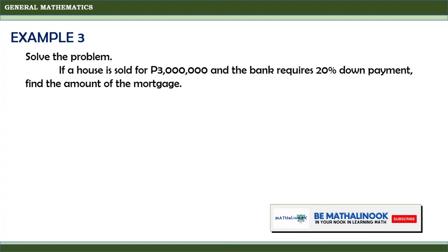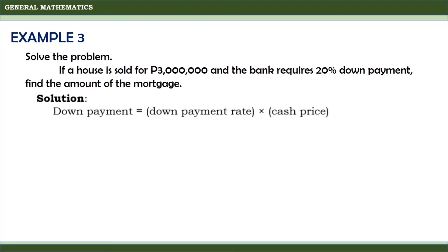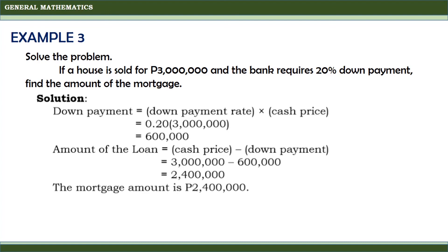Another example: if a house is sold for 3,000,000 pesos and the bank requires a 20% down payment, find the amount of the mortgage. The down payment is equal to the down payment rate times the cash price, so that is 0.20 times 3,000,000, which equals 600,000 pesos. The amount of the loan is equal to the cash price minus the down payment, so 3,000,000 minus 600,000 equals 2,400,000. Therefore, the amount of the mortgage is 2,400,000 pesos.